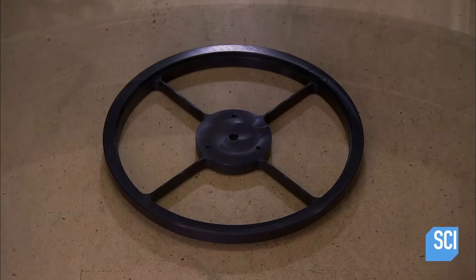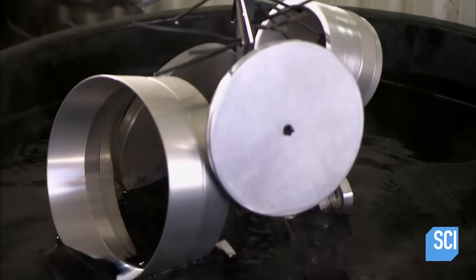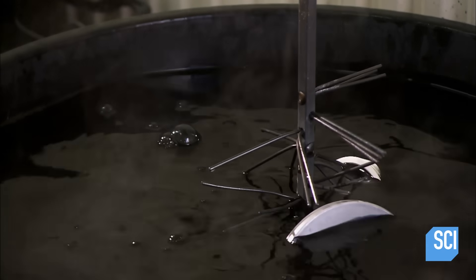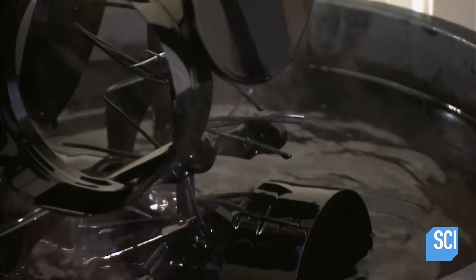After coating the metal parts with protective oxide, they plunge them into a vat of black dye. The dye soaks into the oxidized pores and seals the surface of the parts.